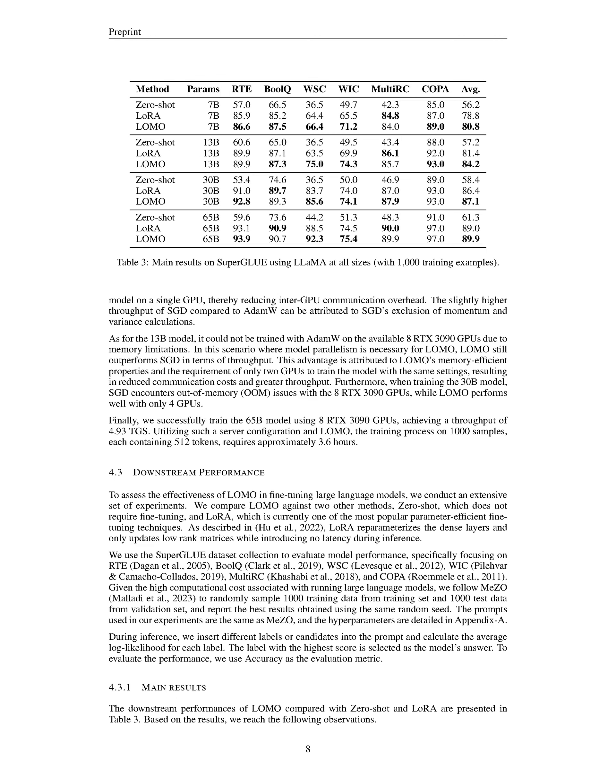When we combine LOMO with activation checkpointing, we can cut down the memory needed for activations from around 45.61 GB to just 1.79 GB. We also measured how efficient LOMO is in terms of throughput and compared it with other optimization methods like AdamW and SGD, conducted on a server with 8 RTX 3090 GPUs connected via PCIe motherboard. For the 7 billion parameter model, LOMO showed remarkable throughput, processing about 11 times as many tokens per second as AdamW and SGD.